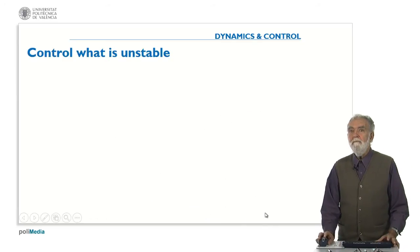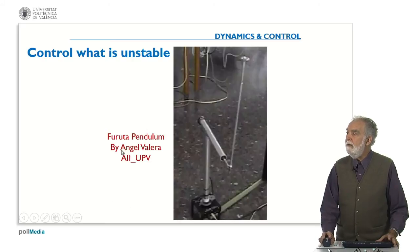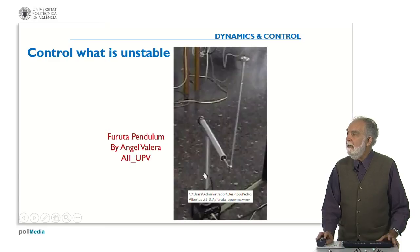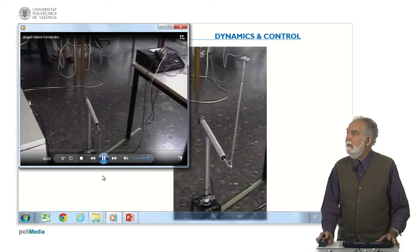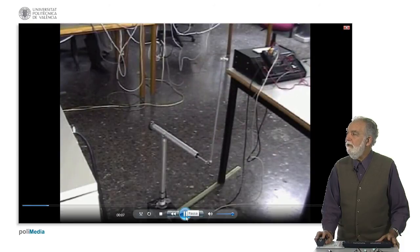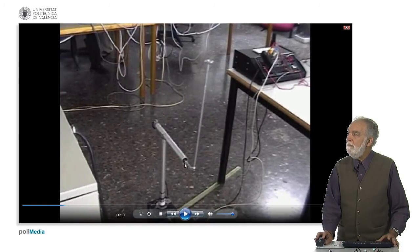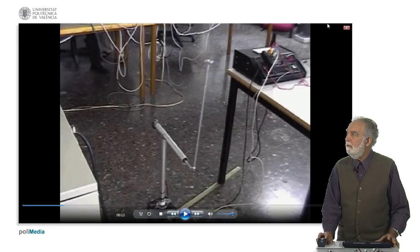So feedback as we said allows us to change the dynamics of the system. Let's see how we can control something which is unstable. Again we have a Furuta pendulum, in that case a Furuta pendulum in our laboratory at the Institute of Automatica and Informatica Industrial at my university. And here you have an inverted pendulum. Let's see how we can control it in the upper position which is the unstable one. You can see here that we are moving the position to keep it in the upper position. So if we stop acting, of course the pendulum will fall down to the lower position which is the stable one.